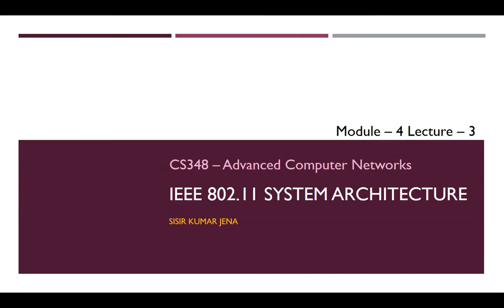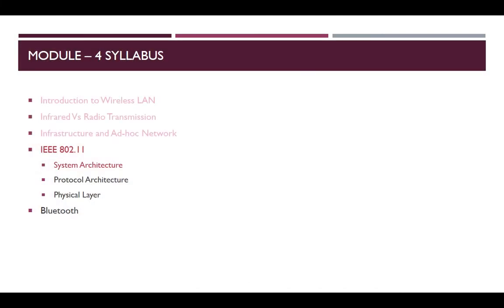Hello and welcome to the course CS348 Advanced Computer Networks. This is the third lecture of module 4. In this lecture we are going to discuss IEEE 802.11 system architecture. Recall from the last two lectures we have already covered introduction to wireless LAN, infrared versus radio transmission, and infrastructure versus ad hoc networks. In this lecture we will discuss the system architecture of IEEE 802.11.